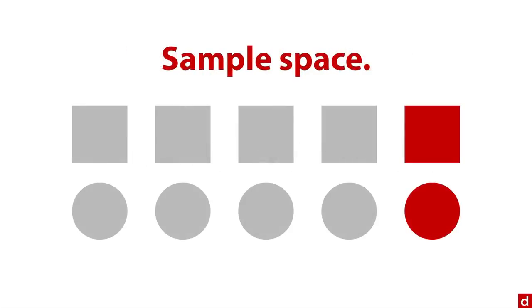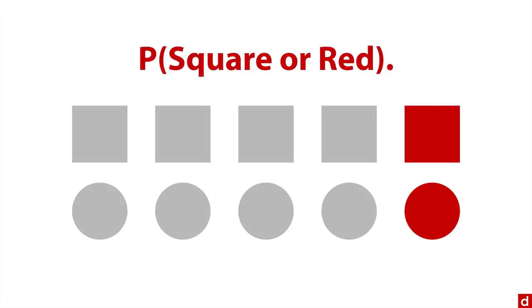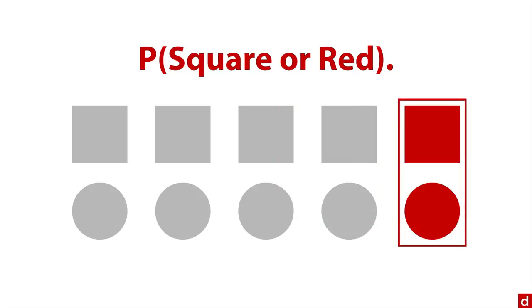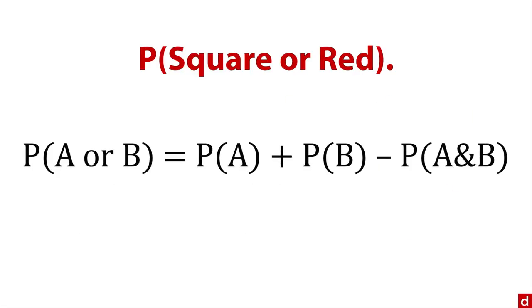I've created a super simple sample space. I have 10 shapes—five squares on top, five circles on the bottom—and a couple of red shapes on the right side. Let's find the probability of a square or a red shape. We're adding the probabilities, but we have to adjust for the overlap. We have five out of 10 squares, and two out of 10 red shapes.